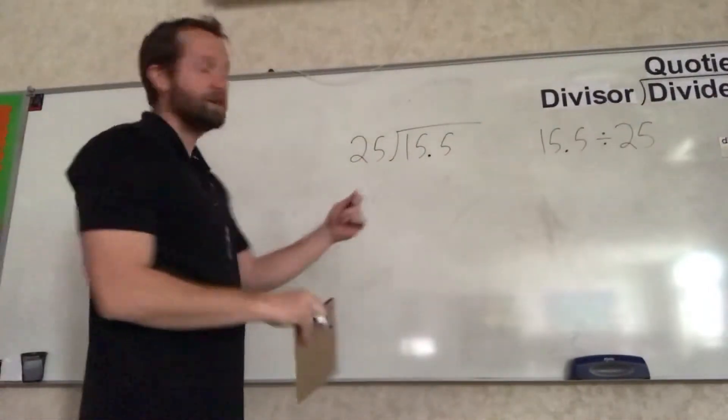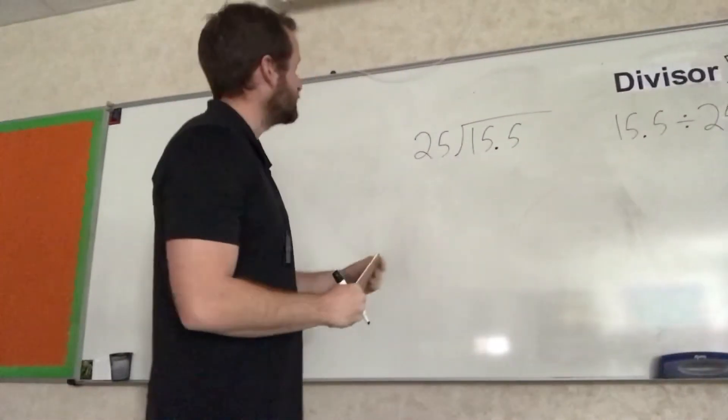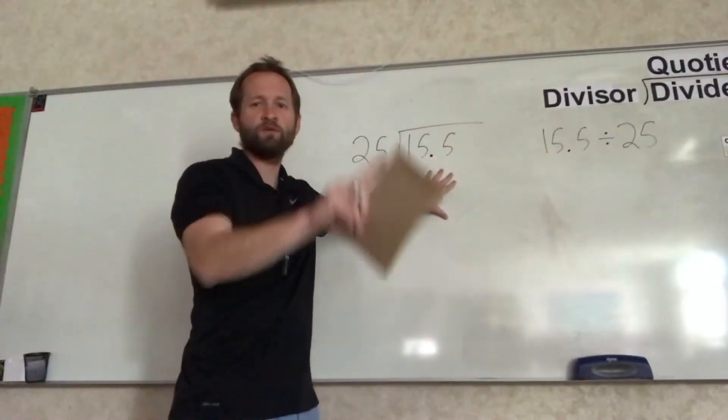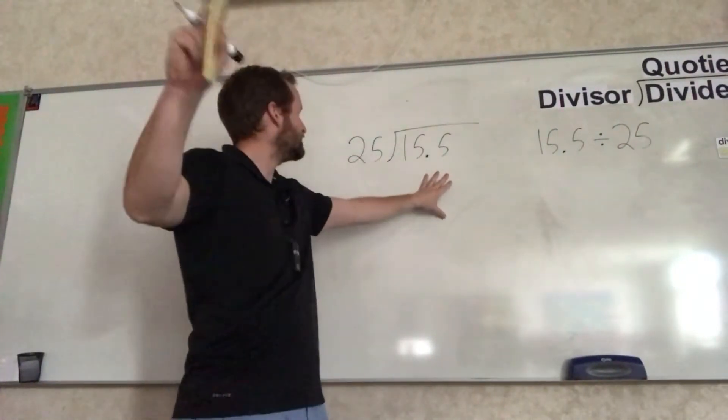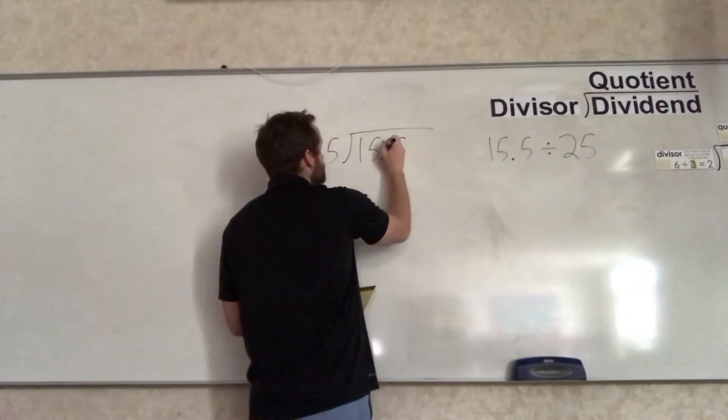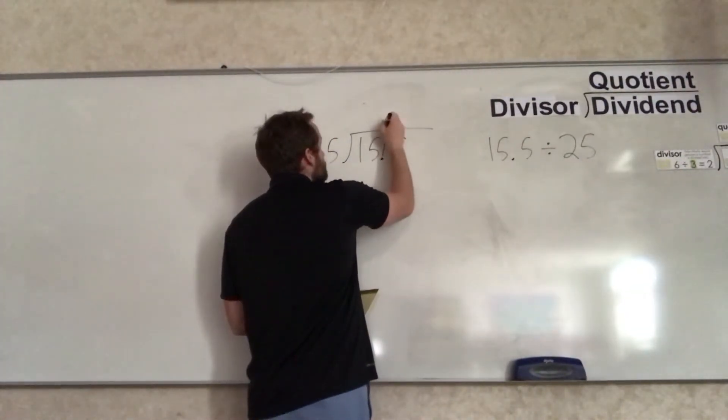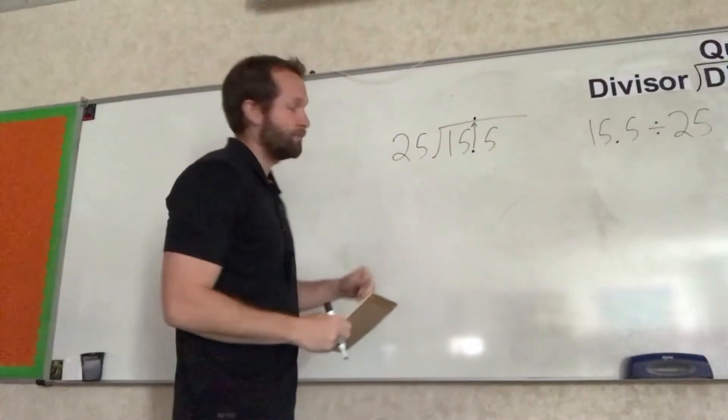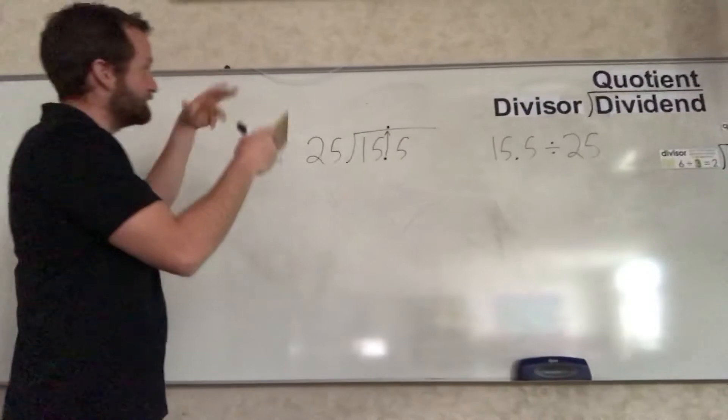We're going to do just like we did yesterday. When we have a decimal in the dividend, the very first thing we're going to do before we start doing any division is take that decimal and move it straight up into the quotient. Now we can go ahead and just divide like normal.